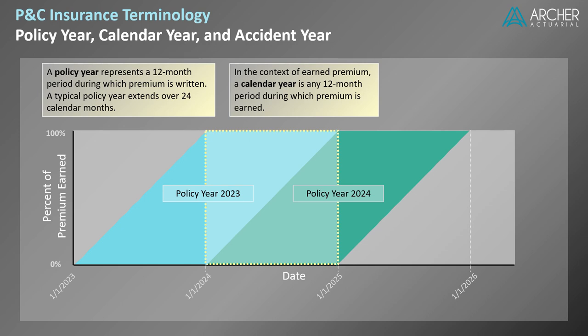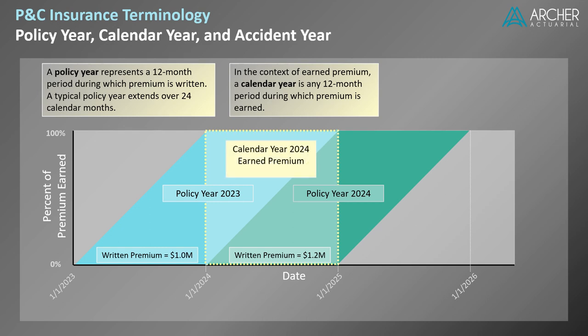In many applications, actuaries assume that premium is written uniformly throughout the year. This assumption allows calendar year earned premium to be estimated based on less information. For example, if $1 million of premium was written in 2023 and $1.2 million was written in 2024, we can estimate the earned premium for calendar year 2024 as 50% of $1 million and 50% of $1.2 million, which equals $1.1 million.